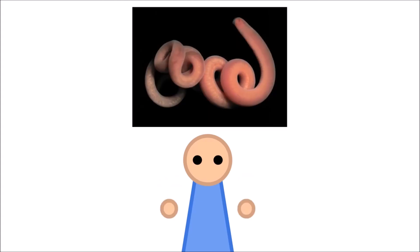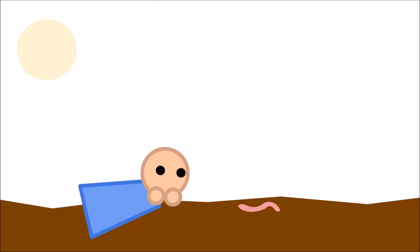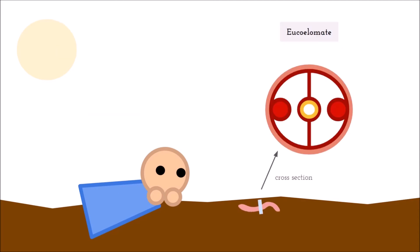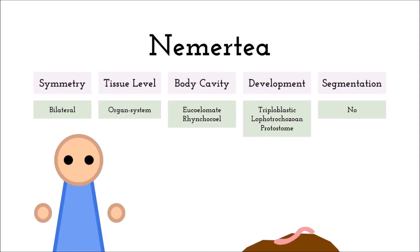On to our next worm, nemertea, or ribbon worms, the first in our exploration to have organ system level tissue, meaning multiple individual organs work together in a bigger system. This bilaterian is also a triploblastic Lophotrochozoan protostome, but differs in having a eucoelomate body cavity. Unlike acoelomates, eucoelomates do not lack the fluid-filled cavity between the gut and the body wall. Additionally, they have a mesodermal cavity called the rhynchocoel, which houses their proboscis, a sticky appendage that can reach out and capture things or even inject neurotoxin. Once again, this organism is not segmented.